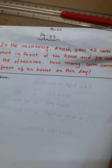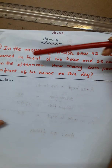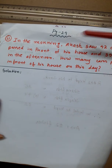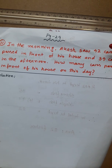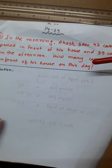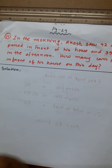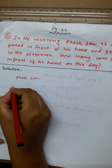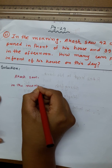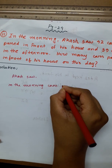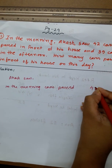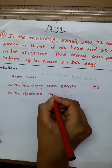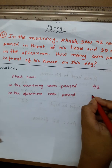In the morning, Akash saw 42 cars pass in front of his house, and 39 cars in the afternoon. How many cars passed in front of his house on this day? In the morning, cars passed: 42. In the afternoon, cars passed: 39.